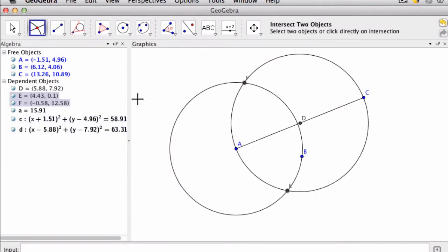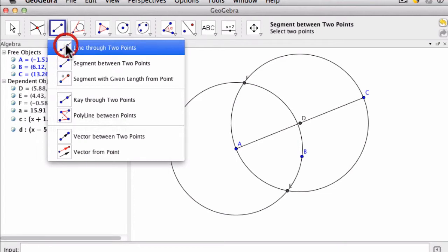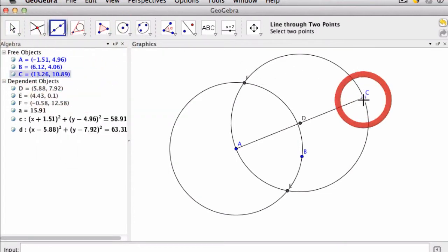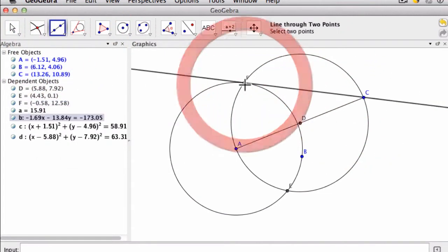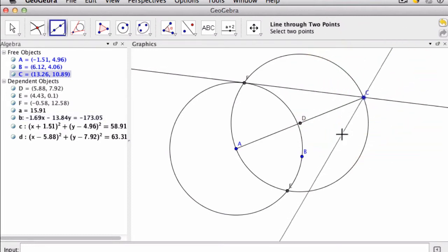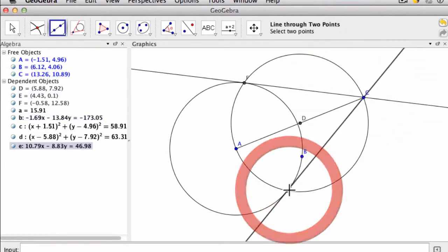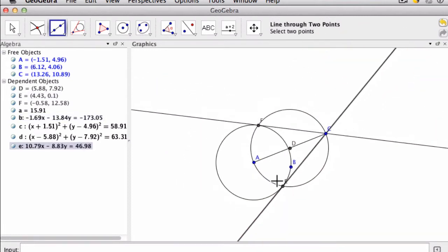And what I'm going to do is pick my line tool here and create a line that goes through point C and F. And there's one tangent line, right? And there's another. And here you can zoom out to see what's happening.